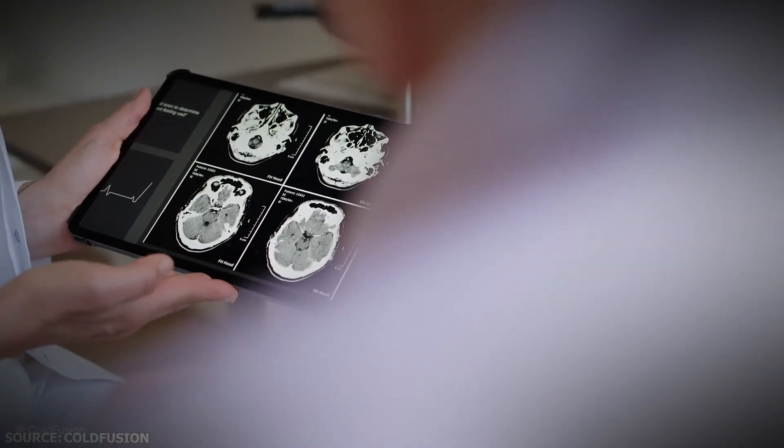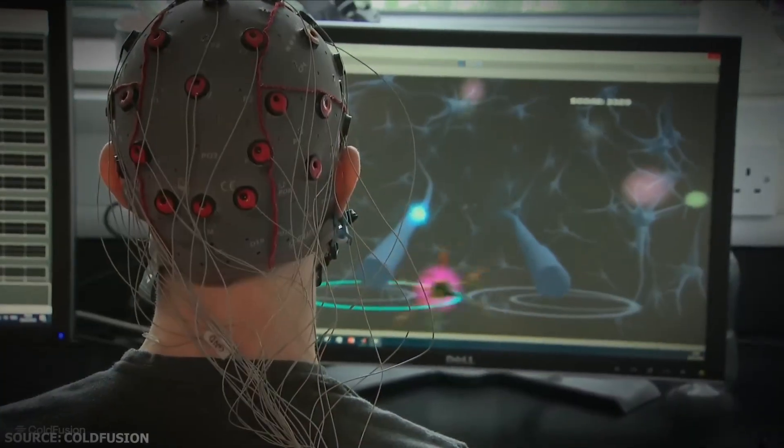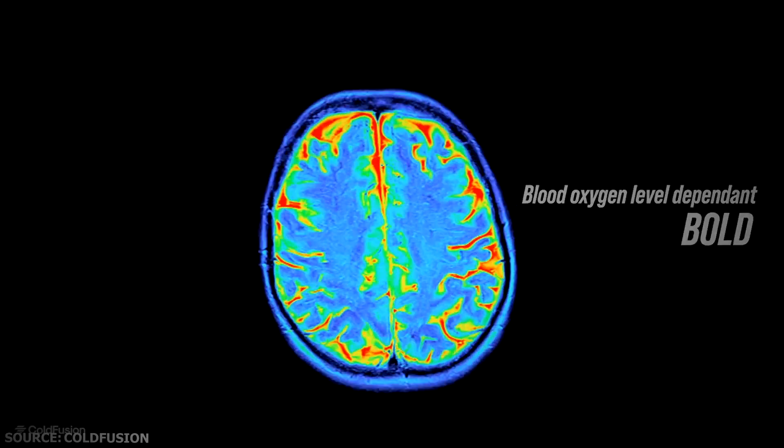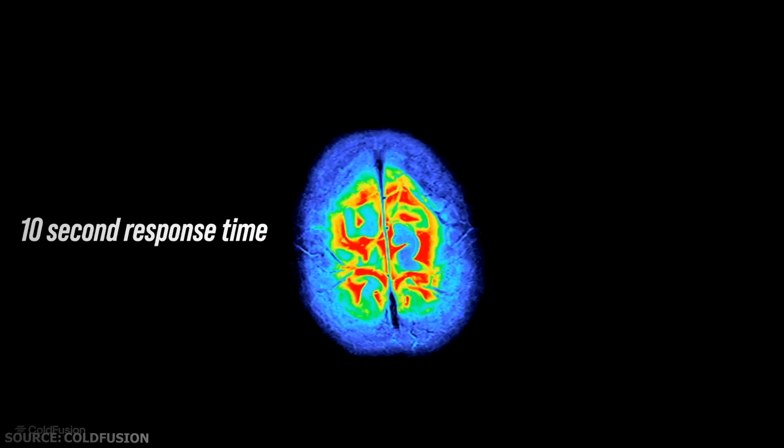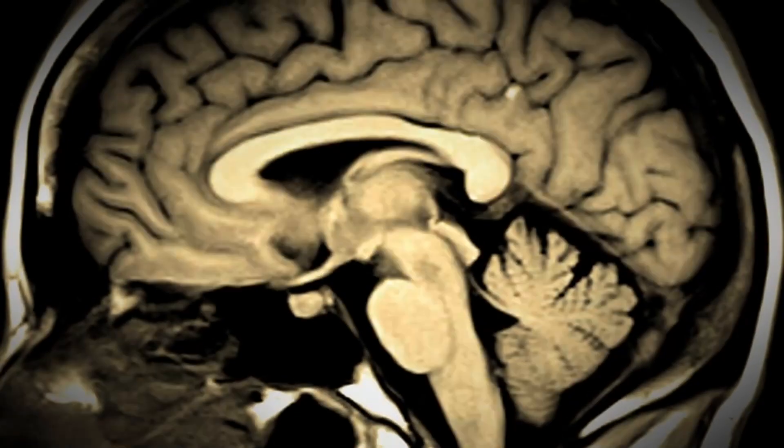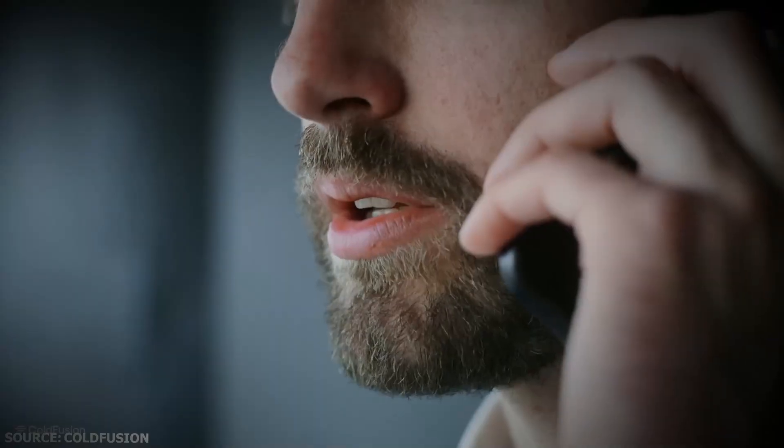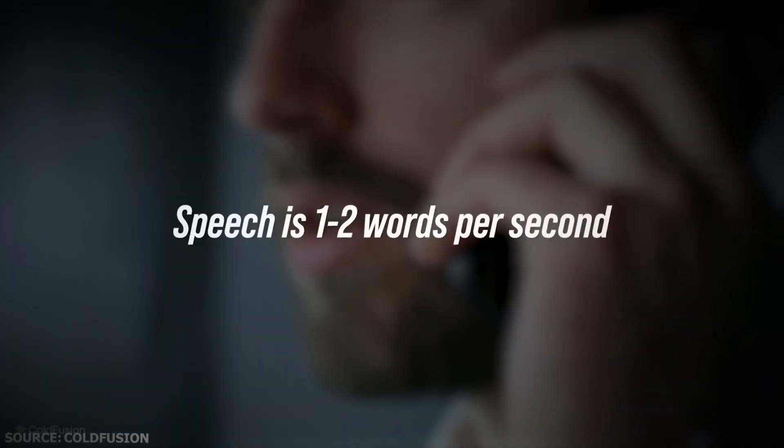The major limitation is its temporal resolution, or in other words, how quickly it captures changes in brain activity. The blood oxygen-level dependent signal that fMRI measures is super slow. It takes about 10 seconds to rise and fall in response to neural activity. Humans normally say two to four words per second.